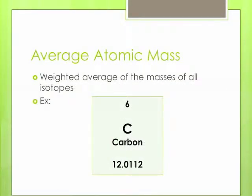Let's talk about average atomic mass, because that's what's shown on the periodic table. This 12.0112 in amu's tells you the average mass of a carbon atom. It's the weighted average of the masses of all the isotopes. A weighted average just means that if there's more of them, then it's a larger percentage.